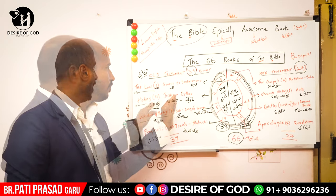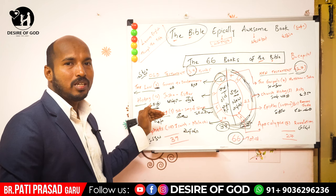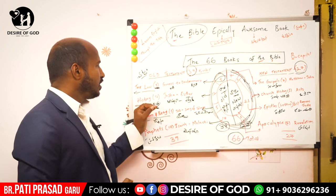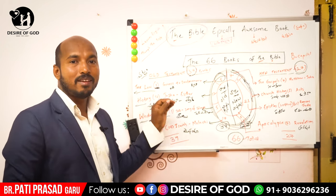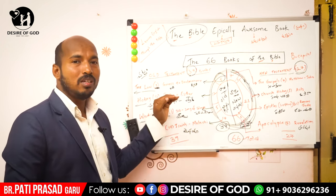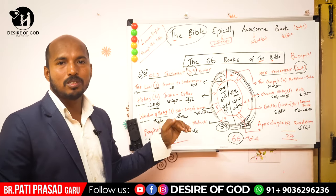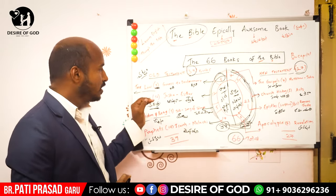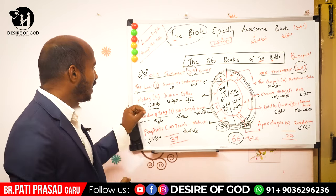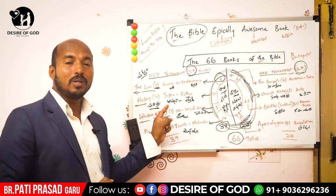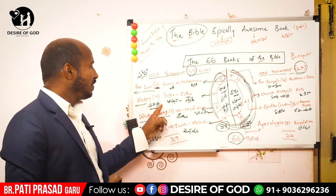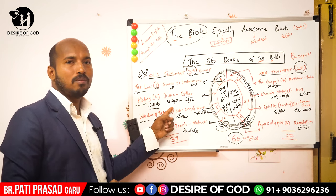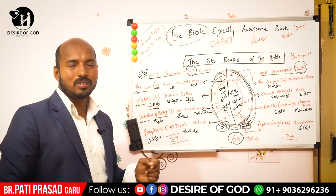The next category is History. History has 12 books which talk about the history of Israel. History starts from the book of Joshua to the book of Esther.